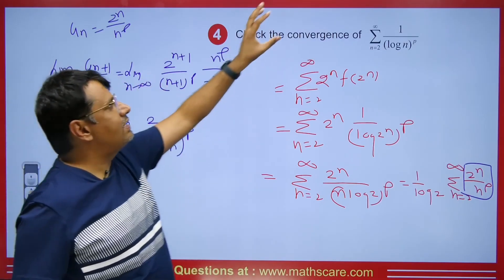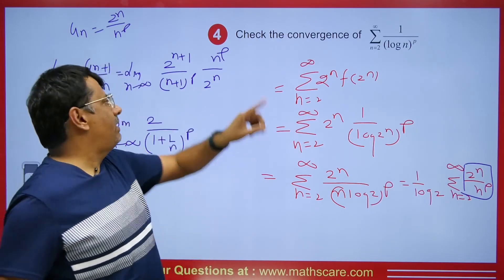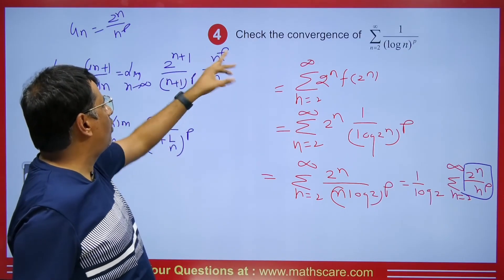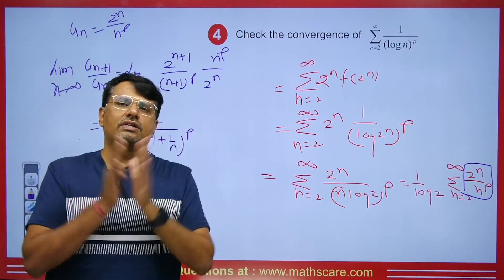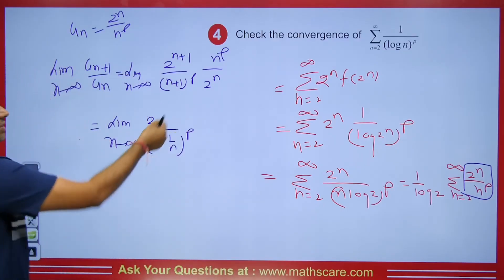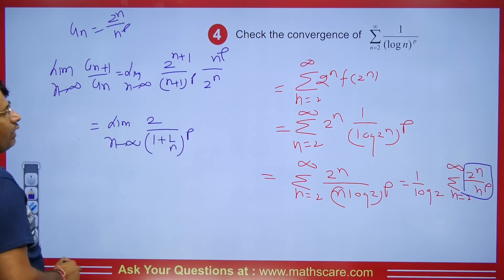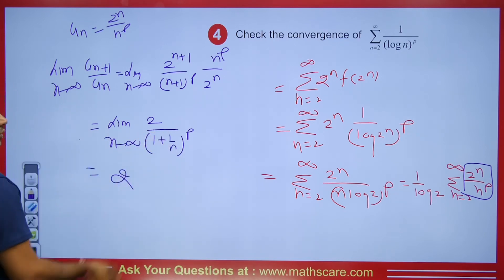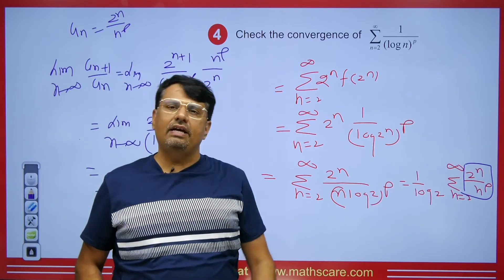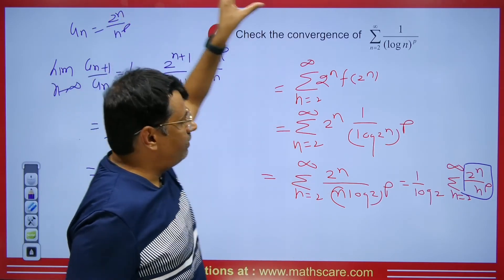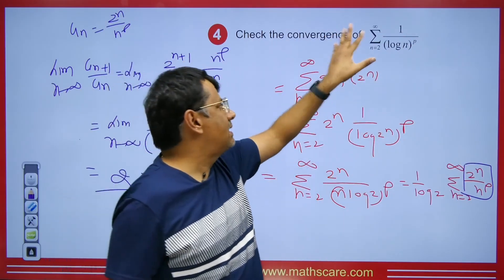So ultimately this series is divergent. You might ask: when will it be convergent? You can try p = 2, 3, or 4 — any value you want. For all values of p, the series will be divergent, because changing the value of p makes no difference. Ultimately, as soon as you put any value for p, the value of the limit comes out as 2, which is greater than 1 — meaning the series is always divergent. So this condensed series is divergent, which means the original series is also divergent for all values of p.